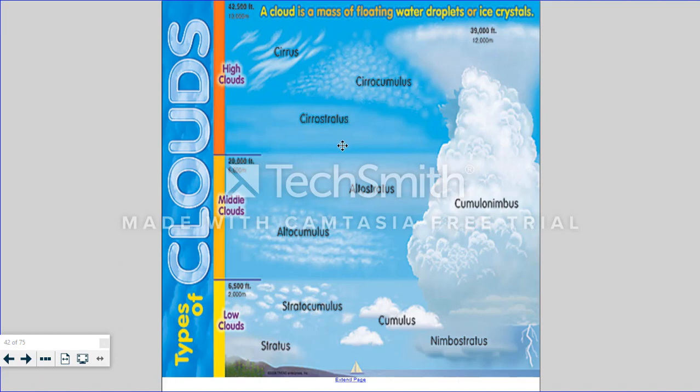Now any of these clouds can combine to bring about different types of weather. Here you see a cumulonimbus cloud. Nimbo meaning rain, rainy weather. And so when you get cumulonimbus clouds, you might get thunderstorms and even lightning.